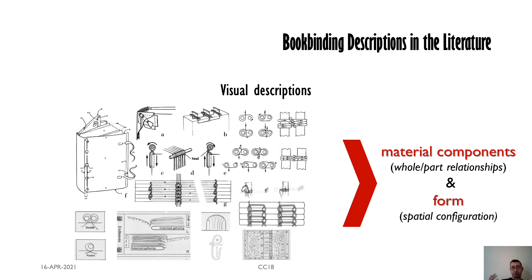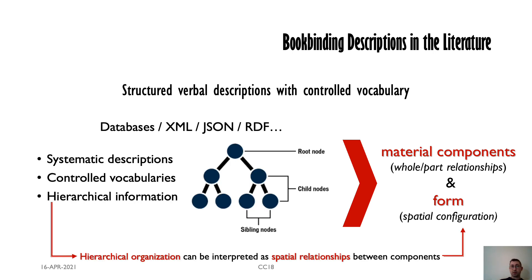If one looks in the literature, we find that most binding descriptions rely on diagrams and drawings to really illustrate the material components and the form of the binding structures. More recently, we see that more and more people rely on structured descriptions within databases, helped with controlled vocabularies using technologies such as XML, JSON, and RDF to describe bookbinding structures in a more guided way.